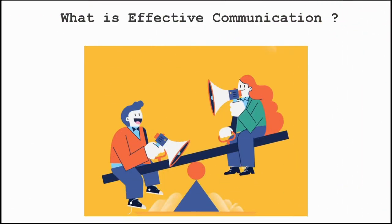Let's see what is communication. Communication is a transfer of information from one person to another, or one team to another team, or one company to another company — a transfer of information from one place to the other. If it is done effectively without any chaos, then it's called effective communication.